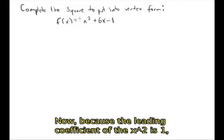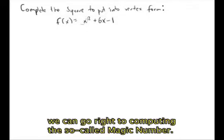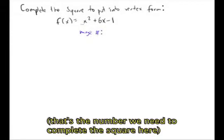Because the leading coefficient here is 1 on the x squared, we can just go right to computing the so-called magic number. And that's the number that we need to complete the square here.